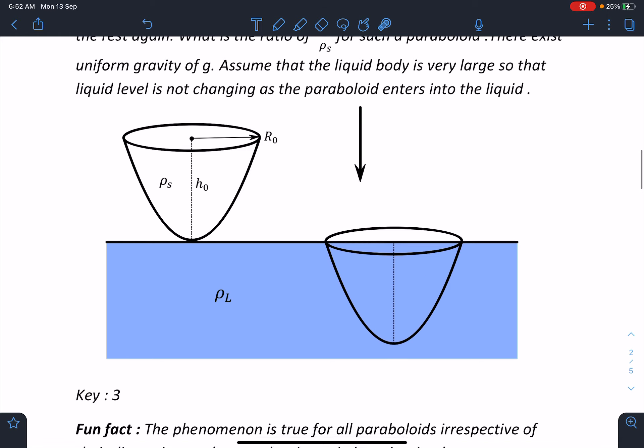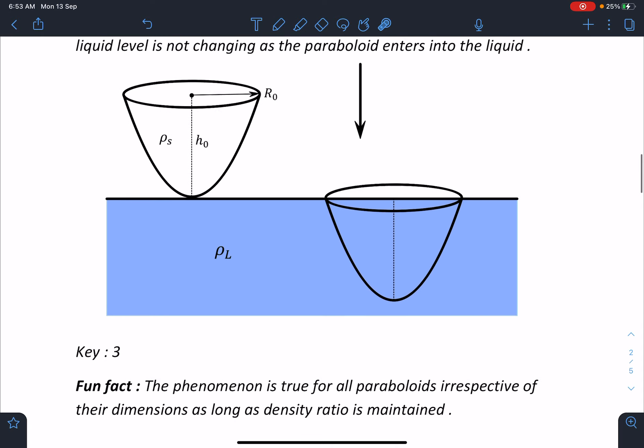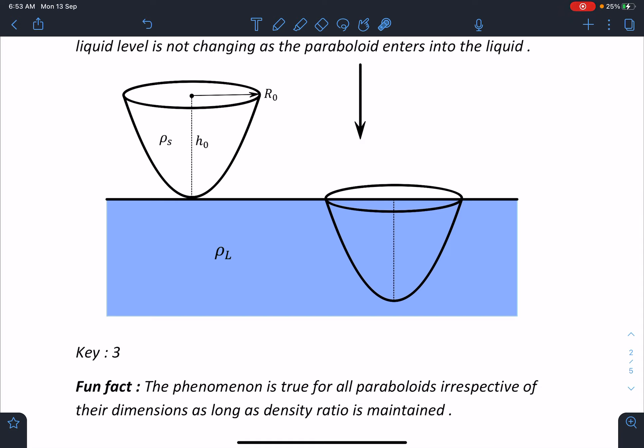Alright, so there is a fun fact in this problem and the key was three that this phenomenon is true for all paraboloids irrespective of their dimensions. That means, it does not matter what is the radius and what is the height as long as density ratio is maintained between this solid and liquid density. So this is the very amazing part.